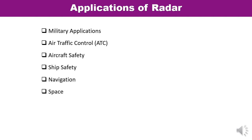The sixth application is space. Space vehicles use radar for landing on the moon, and some of the largest ground-based radars are used for detection and tracking of satellites. Seventh is remote sensing. All radars are remote sensors used for sensing geophysical objects. Radar is used extensively for getting information about weather conditions. Remote sensing radars are also concerned with earth resources like ice coverage, agriculture, forestry conditions, and environmental pollution.